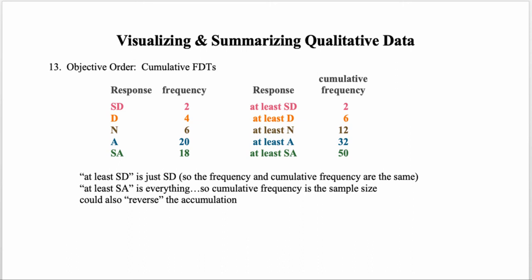Responding 'at least strongly agree' covers everyone who responded agree, neutral, disagree, or strongly disagree — so the last value in the cumulative frequency distribution table always equals the sample size. It's also possible to present the reverse form, where you calculate cumulative frequencies from the top down — 'at most strongly agree,' 'at most agree,' 'at most neutral' — building the cumulative sum in the other direction.